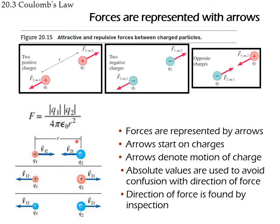The distance r is the separation between the charges. q1 and q2 are the magnitudes of the charges. For a positive and negative pair they attract. The force felt by charge 1 is produced by charge 2, pointing toward it; and the force felt by charge 2 is produced by charge 1, pointing in the opposite direction. Both have equal magnitudes but opposite directions.